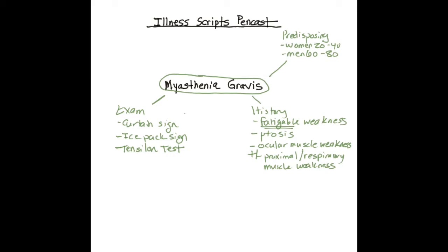A test that can be considered on exam is the Tensilon, or edrophonium, test. Edrophonium is a short-acting acetylcholinesterase inhibitor, which will flood the synapse with acetylcholine, hoping to transiently overcome the inhibition present in myasthenia. Patients will often have a significant improvement in symptoms. Keep in mind that this is a marked increase in acetylcholine not limited to just the neuromuscular junction — it will have effects elsewhere, including the AV node via vagal nerve stimulation, which can result in bradycardia and sometimes syncope.